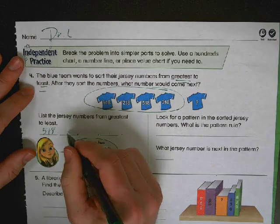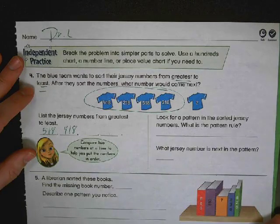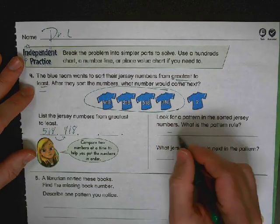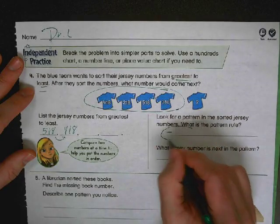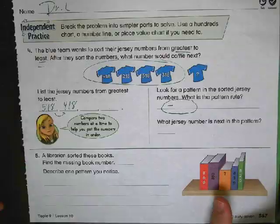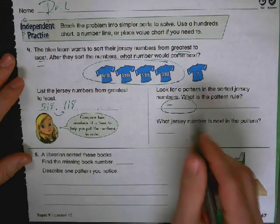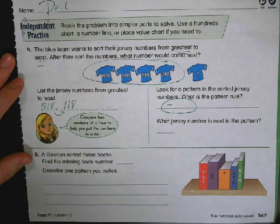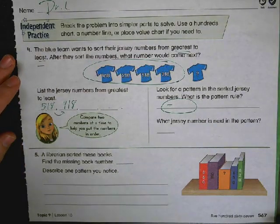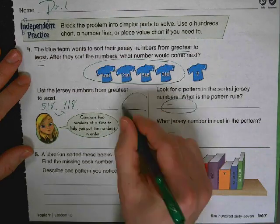518, 418. Figure out the last two. And you're looking for the pattern between them. Well this is going down by minus something. How can you get 518 to 418? So the pattern rule - what is it adding or subtracting by and how much? It's not by plus 5 or minus 5 or plus 10 or minus 10. You're going to figure out. And then what jersey number is going to come next in the pattern? It would be this next one right here. What would come next?